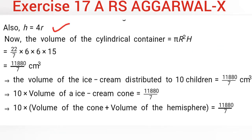We want to find the volume of the cylindrical container which holds the ice cream, so that we know the total amount of ice cream to distribute to 10 children in equal cones. The volume formula we use is πR²H, where capital R and capital H are used for the cylinder.